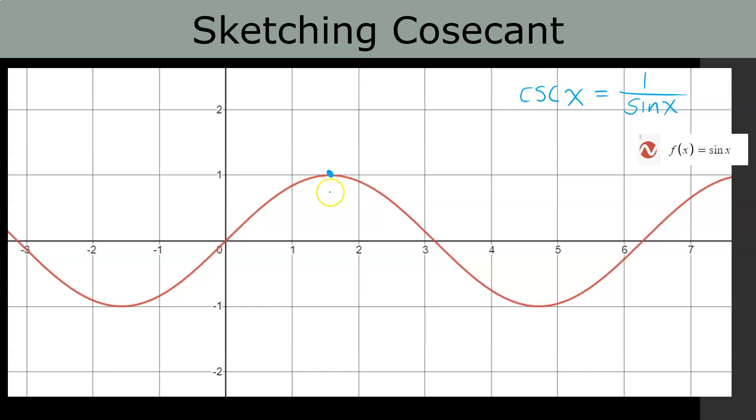So this point right here at π/2, 1—what's the reciprocal of 1? It's 1. Because sine of π/2 is 1, so the reciprocal of sine, cosecant of π/2, at the same x value, is going to be the reciprocal of 1, which happens to be 1. So we'll just keep 1 on there. And then sine of 3π/2 is -1, which means cosecant of 3π/2 is the reciprocal of -1, which is -1.